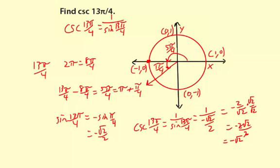So our cosecant of 13π over 4 is negative square root of 2.